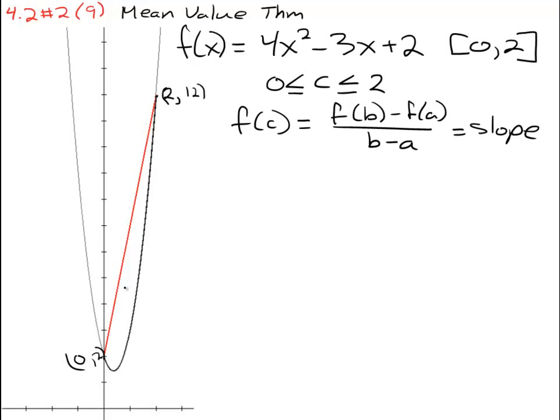So the slope of this line is very simply 12 minus 2 over 2 minus 0, or 10 over 2, or 5.